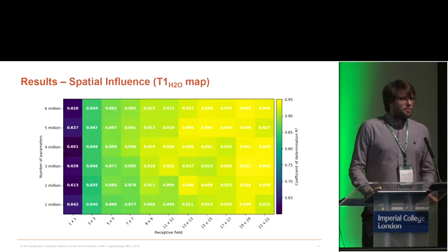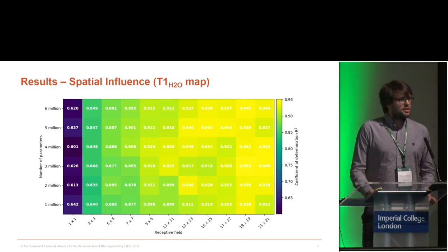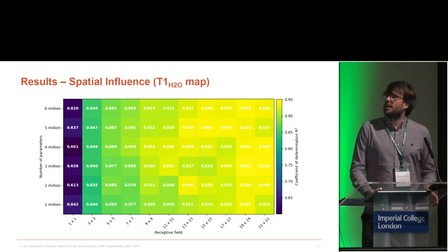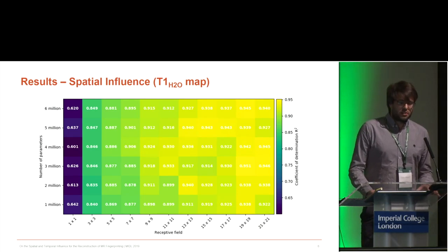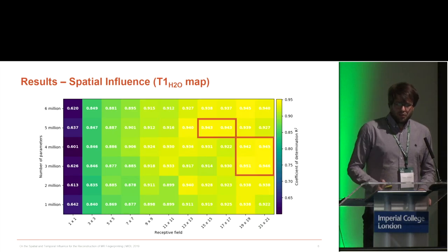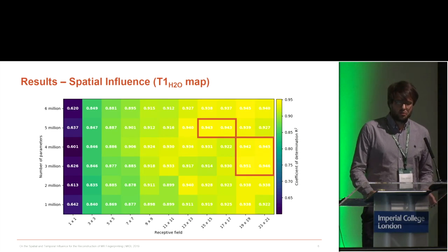We were particularly interested in the spatial and temporal influence of the reconstruction. Regarding the spatial influence, we varied the receptive field of the CNN on the x-axis from 1² to 21², and also varied the number of parameters of the CNN. We found that receptive fields between 15² and 21² work fairly well for our MRF sequence.